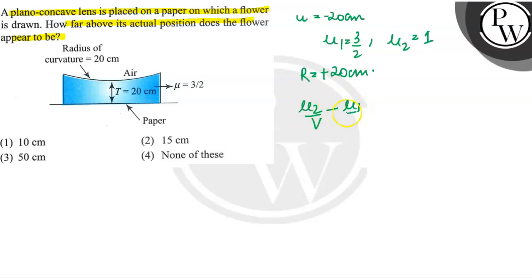So what is mu2 by v minus mu1 by u is equal to mu2 minus mu1 by r.